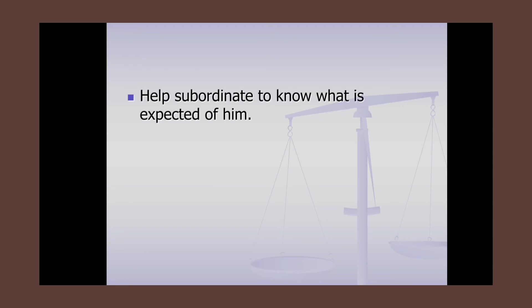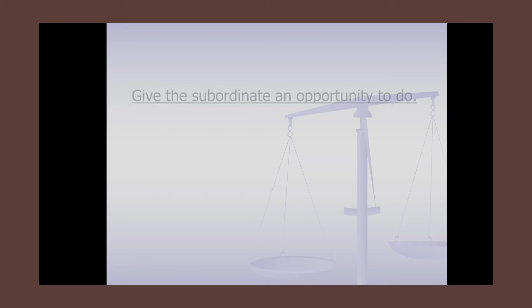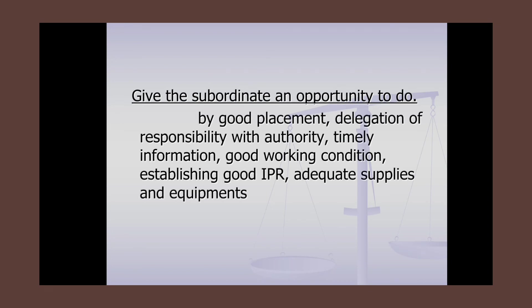The second step is helping subordinates know what is expected of them by setting standards, objectives, quality desired in output, work direction, protocols, and schedules. The third step is giving subordinates an opportunity to perform through good placement, delegation of responsibility with authority, timely information, good working conditions, safety, good interpersonal relationships, and adequate supplies and equipment.